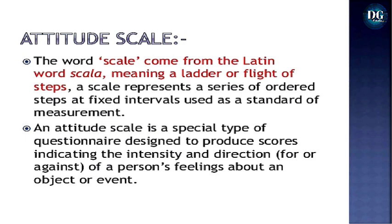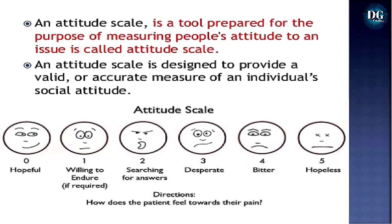An attitude scale is a special type of questionnaire designed to produce scores indicating the intensity and direction of a person's feeling about an object or event. It is a tool prepared for the purpose of measuring people's attitude to an issue, and is designed to provide a valid or accurate measure of an individual's social attitude — for example, how a patient feels towards their pain.